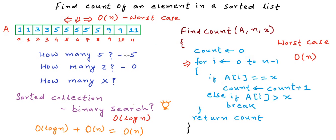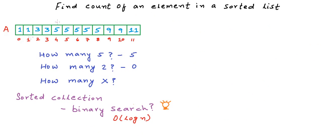With both approaches we are still O(n) in the worst case. However, from our previous lessons on binary search, we can write a binary search variant to find the first occurrence of an element in an array, and similarly another variation to find the last occurrence. This forms the basis of our third approach. If we know the first and last index at which an element occurs, we also know its count.